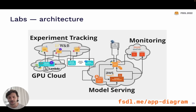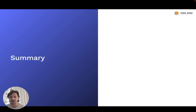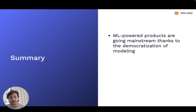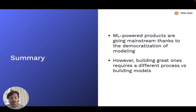To summarize this section: machine learning powered products are going mainstream, in large part because it's much easier to build machine learning models today than it was four or five years ago. The challenge ahead is: given that we can create models pretty easily, how do we actually use them to build great products? That's a lot of what we'll talk about in this class. There are not only different tools you need, but also different processes and mindsets — and that's what we're really aiming to do here in FSDL.